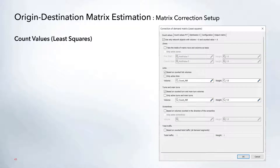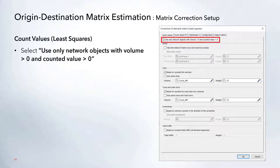Once you click edit, a window appears on the right-hand side. These settings will be slightly different for least squares and T-flow fuzzy, though most tabs are the same for both. For least squares, the first tab is count values. At the very top you can choose to only use objects that have a counted value greater than zero, ensuring the procedure only runs for locations that actually have a count value.